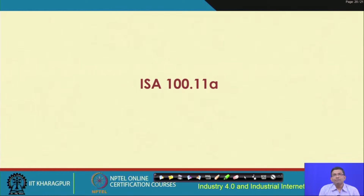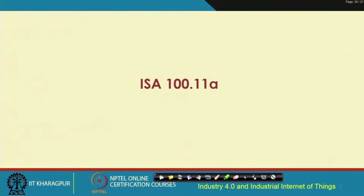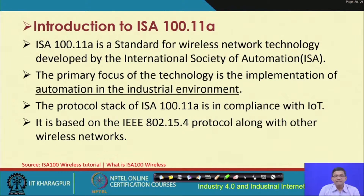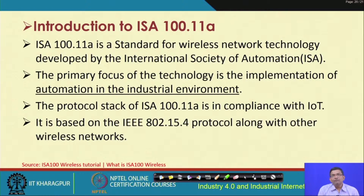Now let us look at another interesting and popular standard: ISA 100.11A, which belongs to the ISA 100.11 series. This is a standard for wireless network technology developed by the International Society for Automation (ISA). It primarily focuses on automation in industrial environments and is based on 802.15.4, but is also attractive for IoT applications — home-based IoT, industrial IoT, and so on.